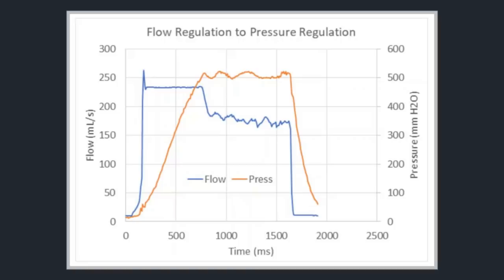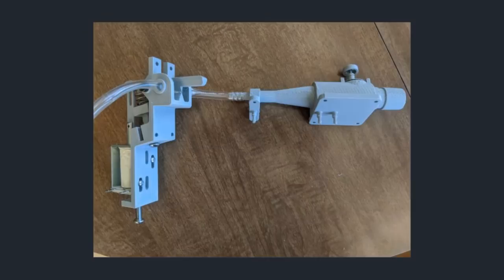Here is a measurement showing the OpVent delivering constant flow followed by constant pressure. Here is the open source proportional solenoid valve on the left and venturi flow meter with pressure relief valve on the right.